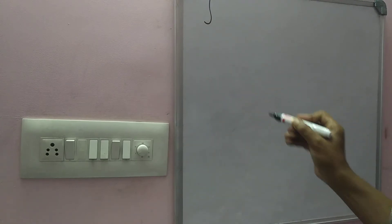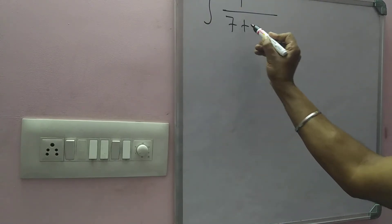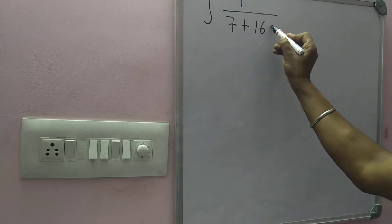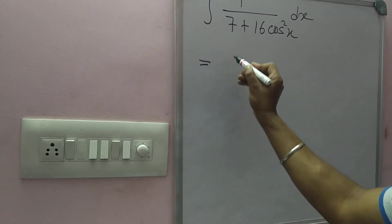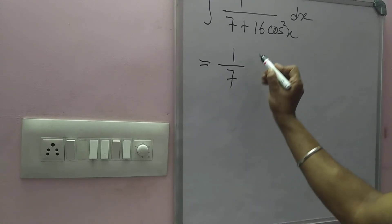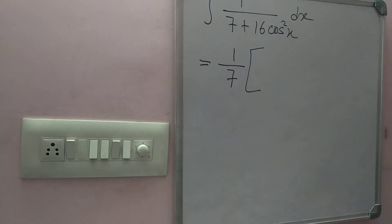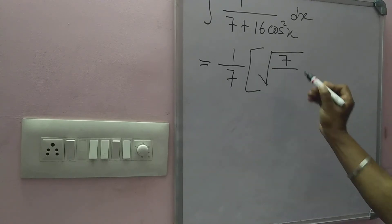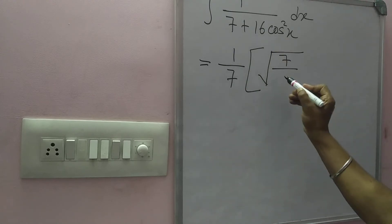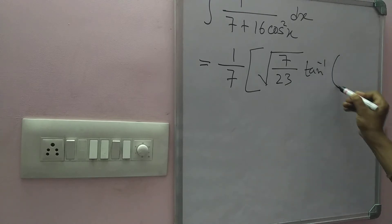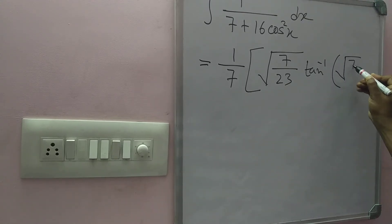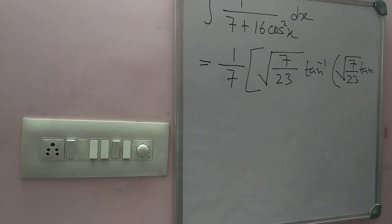One more example: integration of 1 by (7 plus 16·cos²x) dx. Here a is 7 and b is 16, so a plus b is 23. The solution is 1 by 7, times root under (7 by 23), times tan inverse of root under (7 by 23) times tan x, plus c.